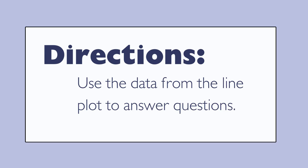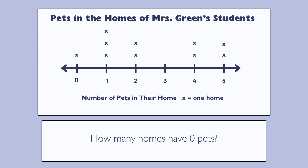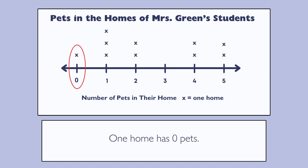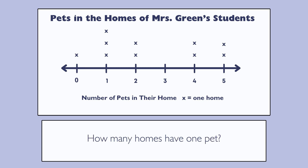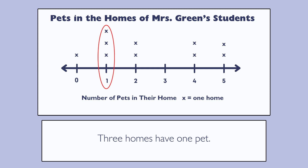Use the data from the line plot to answer questions. How many homes have zero pets? One home has zero pets. I know this because there is only one X above the number zero. Three homes have one pet. I know this because there are three X's above the number one.